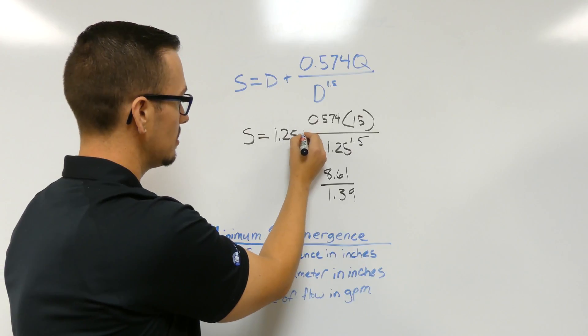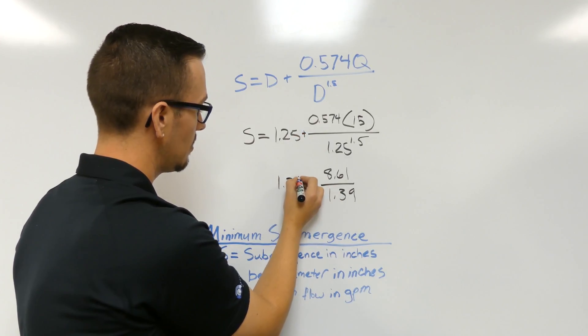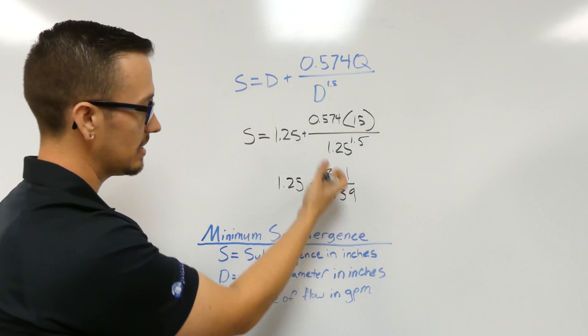And then, oh this is supposed to be plus, plus 1.25. So we'll simplify this down again.